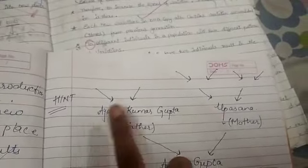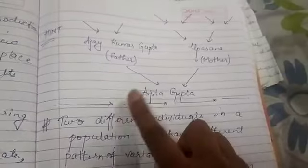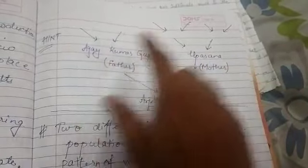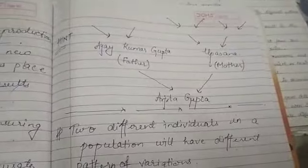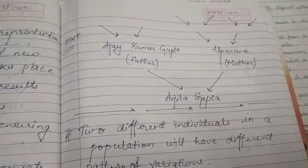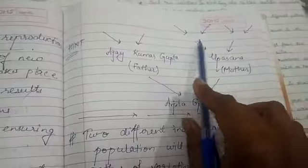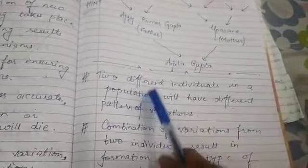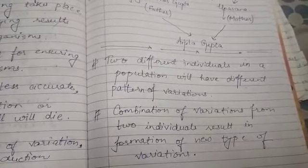For example, Arjata Gupta was formed by Ajay Kumar Gupta and Upasna Gupta, and Mr. Ajay Kumar Gupta and Mrs. Upasna Gupta had different patterns of variation. Along with that, they also had accumulated variations from previous generations — meaning variations passed down through the family lineage. So the variations in the child become even greater, as the variations of both parents get mixed together.